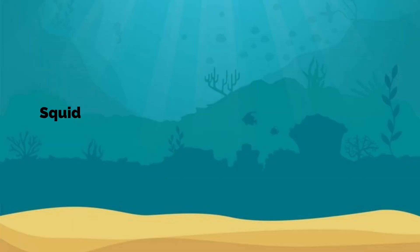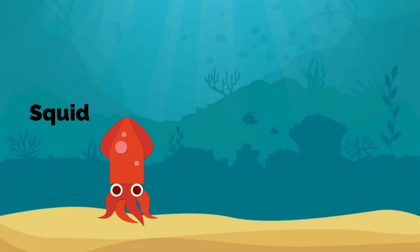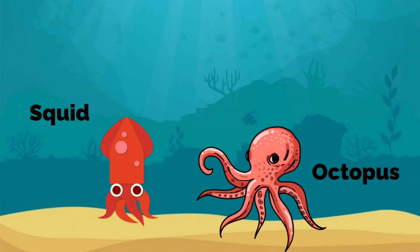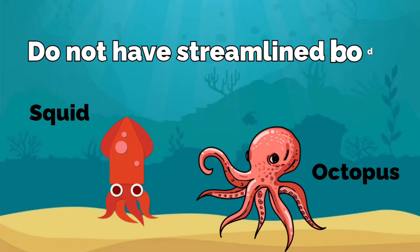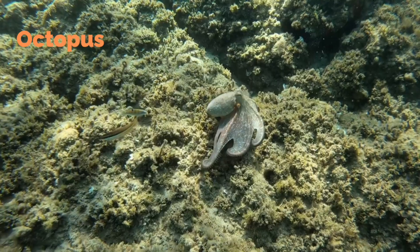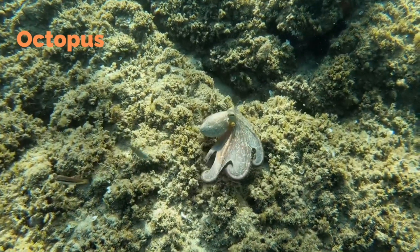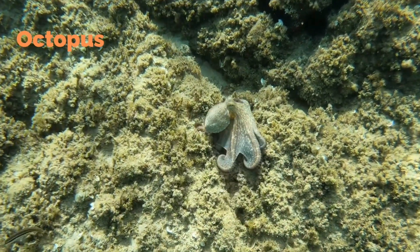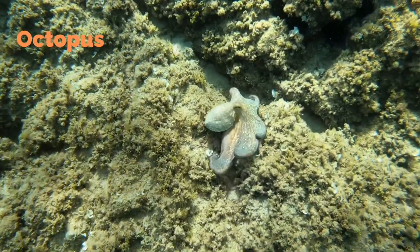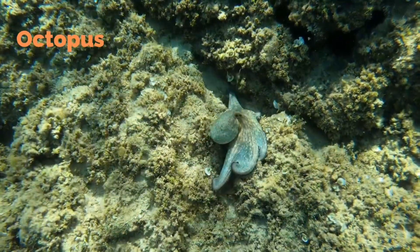Animals like squid and octopus do not have a streamlined body. They live in the deep sea, but when they need to move, they make their body shape streamlined.